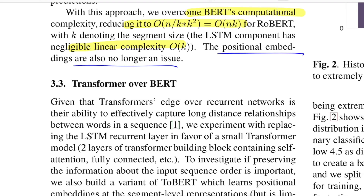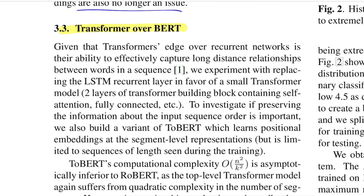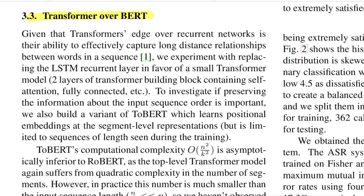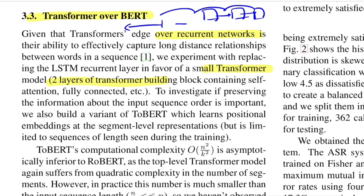The second model, ToBERT, follows the same pipeline as RoBERT but replaces the recurrent units with small two-layer transformer blocks. The motivation is the well-known vanishing gradient problem in RNNs: during backpropagation, gradients computed recurrently tend toward zero after certain time steps, meaning early units are not trained well and the network is limited in how much context it can remember. Transformers avoid this recurrence relation by using positional embeddings to capture word positions, and can process all inputs in parallel.